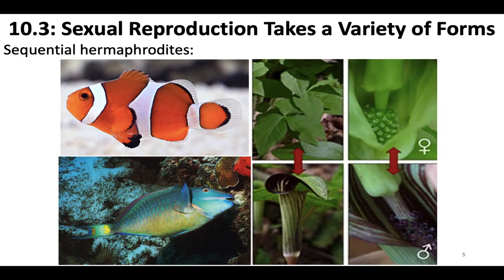The sex change in Jack in the pulpit appears to be triggered by the really large energy cost of producing female flowers. So they'll produce a female flower first, usually, and then a male flower afterwards because it's not nearly as energetically costly. And the leaves in this plant are capable of asexual budding, so they kind of do it all — it's pretty cool.